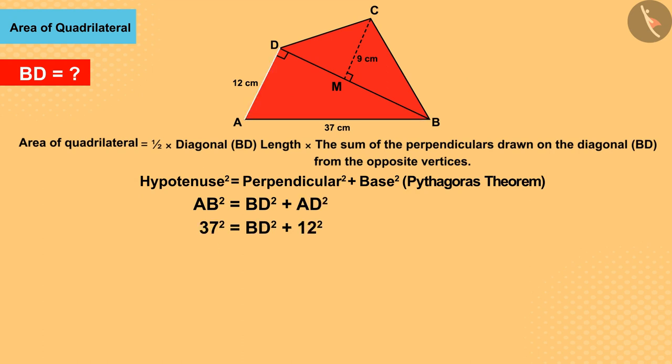By substituting the length of AB and AD as 12 centimeters and 37 centimeters and solving, we get the value of side BD as 35 centimeters, which is the diagonal of quadrilateral ABCD.